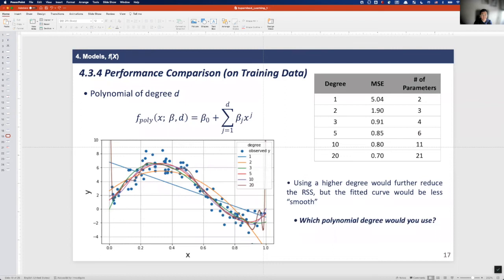Here I plotted six different degrees of polynomial models. For example, if the degree is 1, it means it is simple linear model. And if d here is larger than 2, it is a quadratic model. As you can see here, using a higher degree would further reduce the RSS.